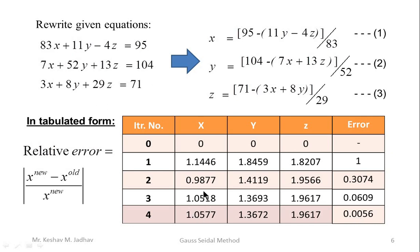We can also compare the last two iterations directly. For the last two values of x, two decimal digits are the same. For y, two decimal digits are the same. For z, all four decimal digits are similar. So x, y, z are accurate to two decimal places.